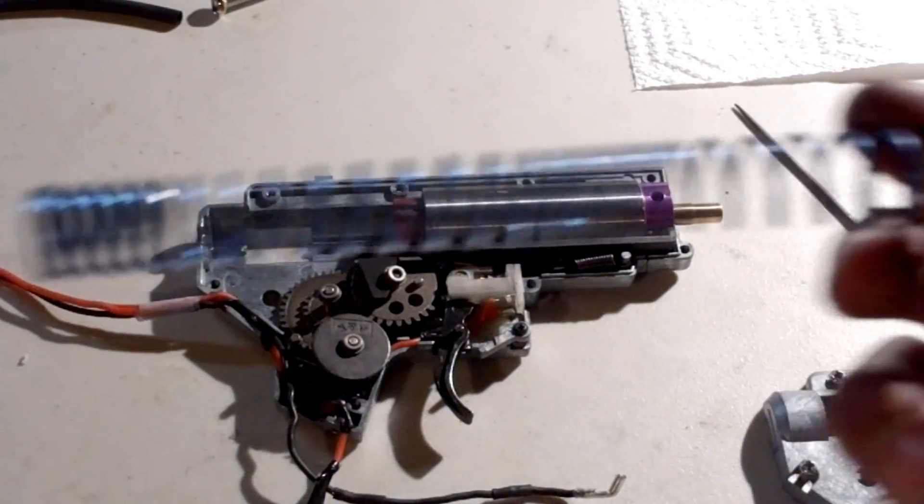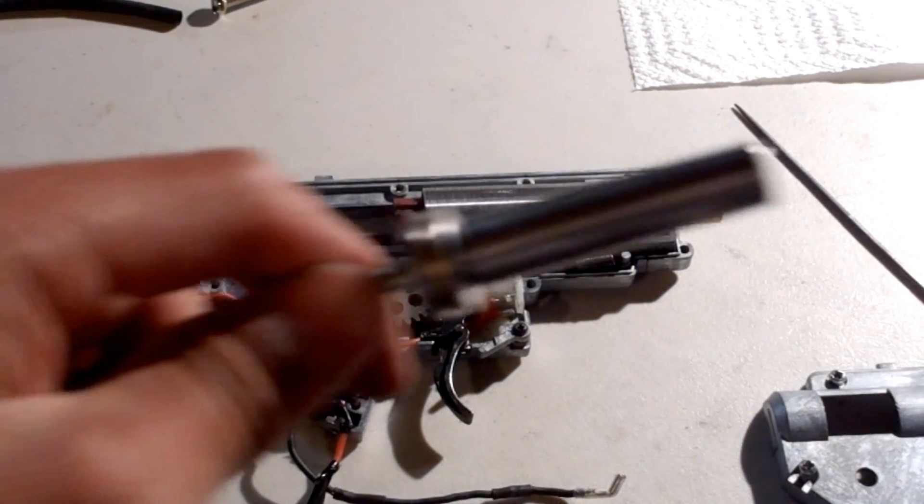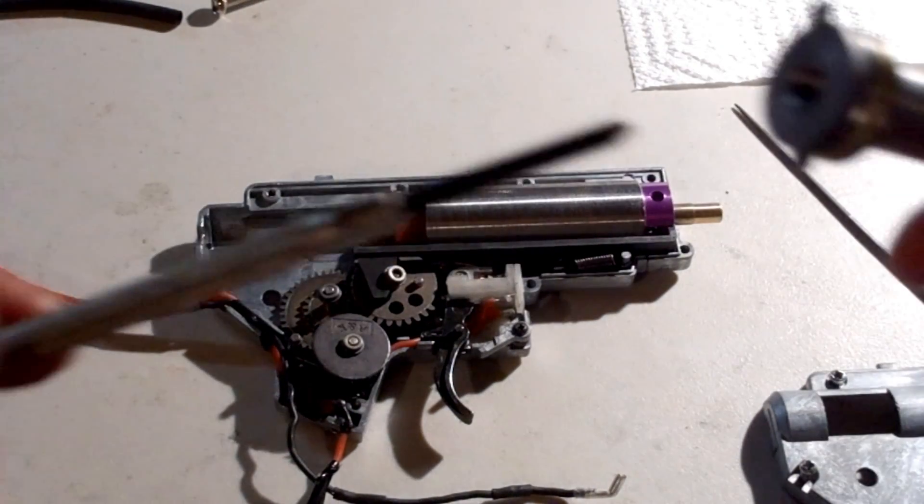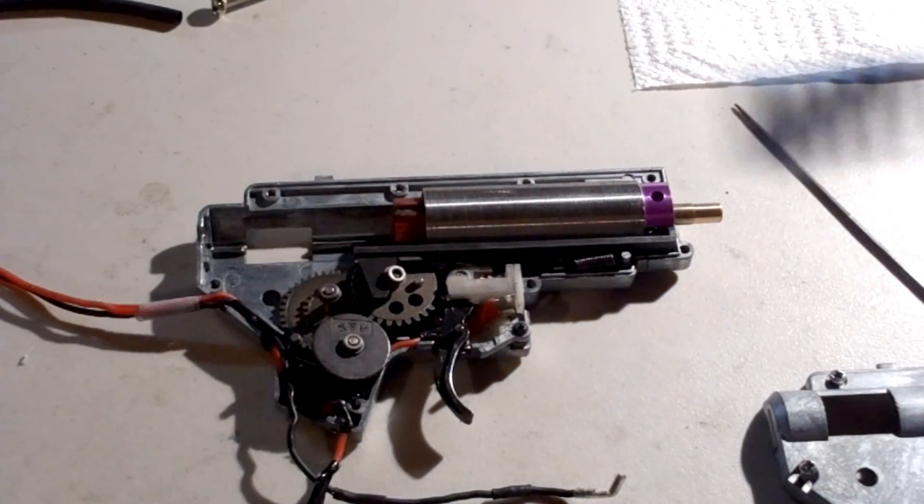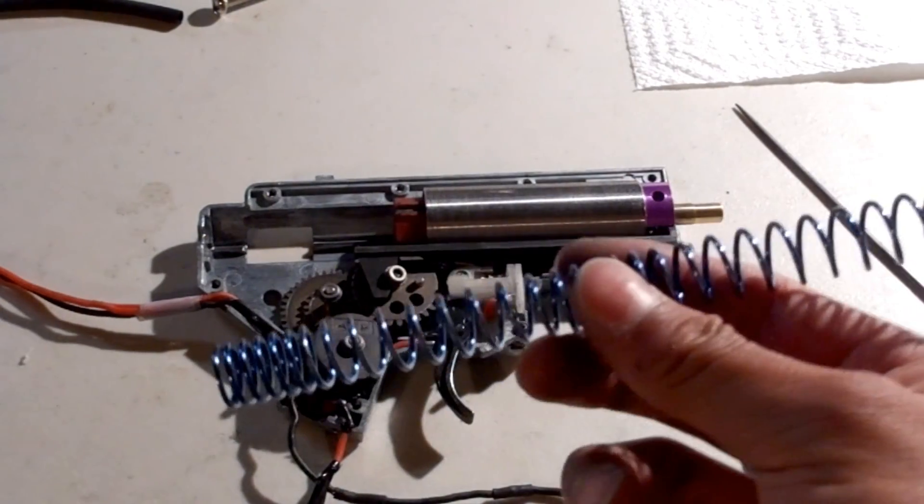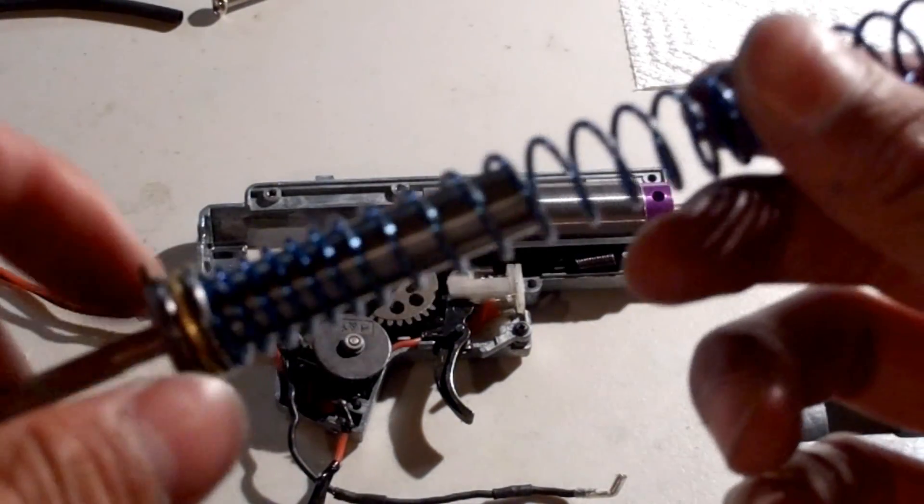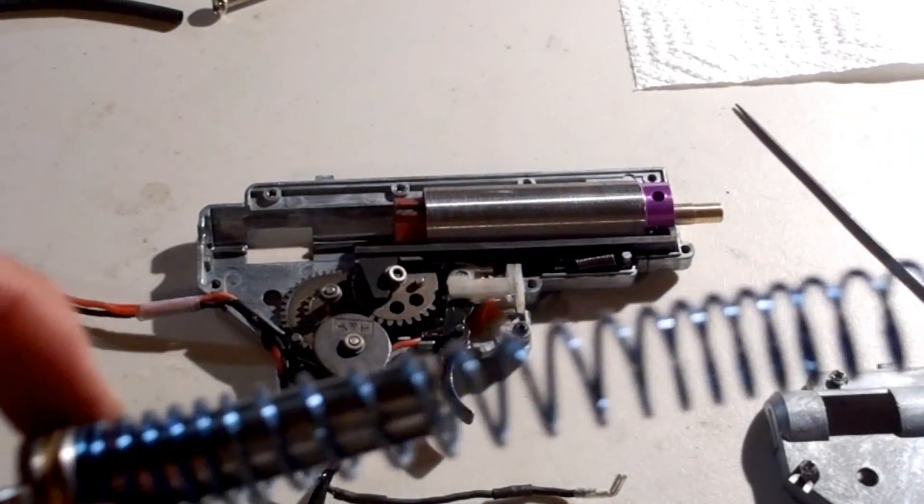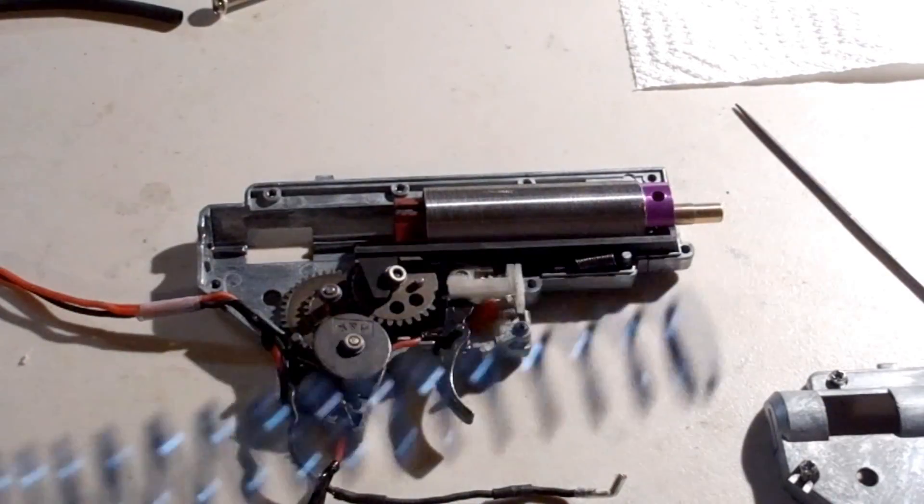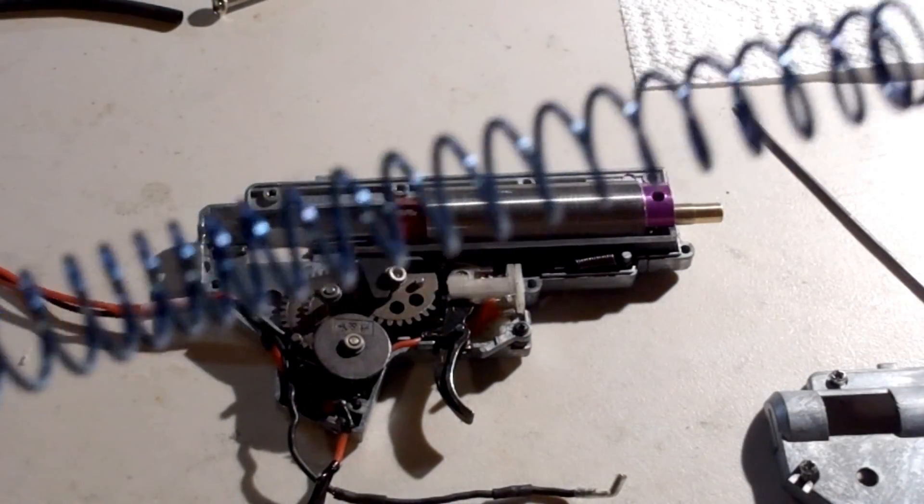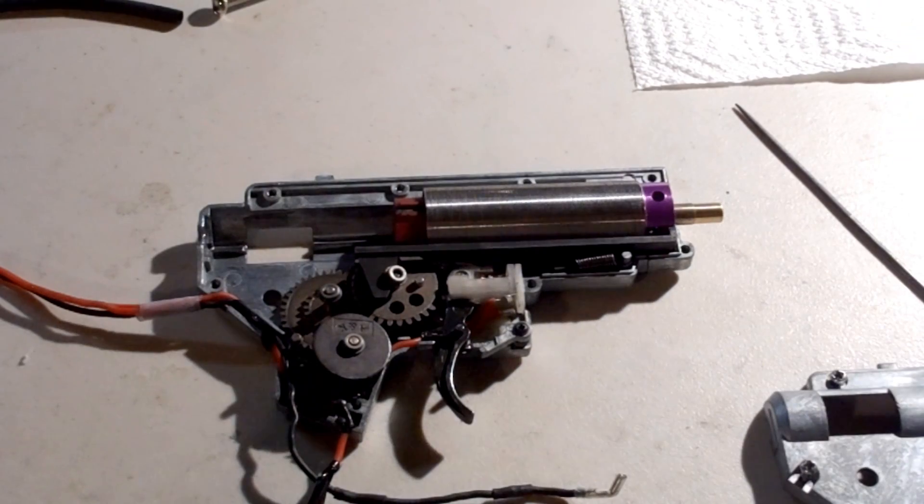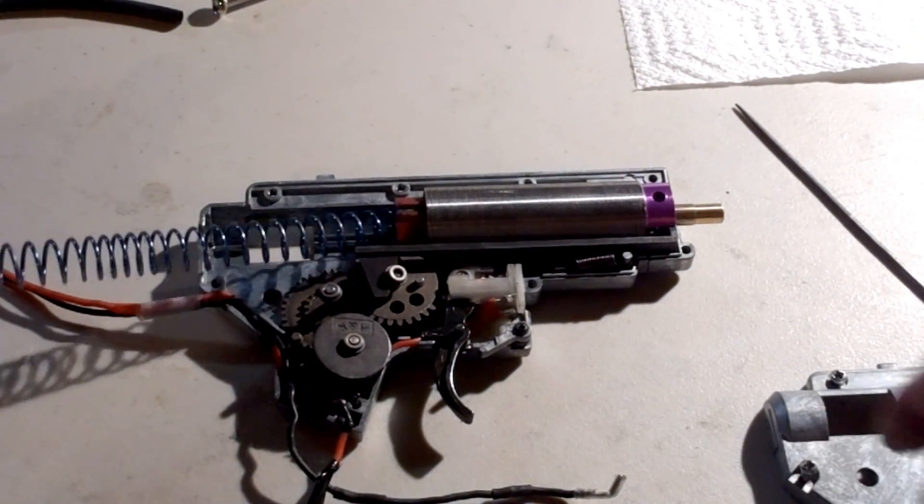Now, take your spring and spring guide. I have a screwdriver in the end of the spring guide. Take your spring, find the more coiled end, which is this end right here, and put it on the spring guide. The most coiled end should be touching the spring guide and the less coiled end should be touching the piston. Now you can install this into your gearbox.